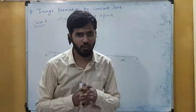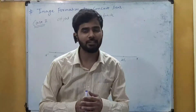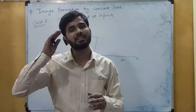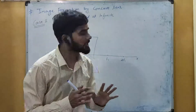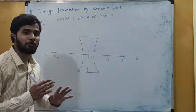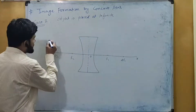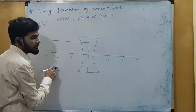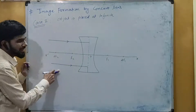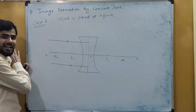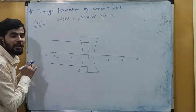This concave lens always forms a virtual and erect image. The first case is when the object is placed at infinite. If the object is at infinite, then the light rays will be parallel to each other and also parallel to the principal axis. Here we will draw two such parallel lines to represent that the object is at infinite.